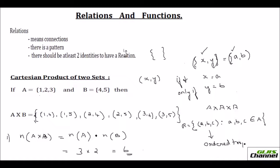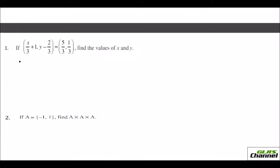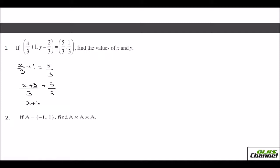These are the basic things you should know about Cartesian product. Let us do a few problems. They have said the ordered pair (X/3 + 1, Y − 2/3) is equal to (5/3, 1/3), and they ask you to find X and Y. When the ordered pairs are equal, the first terms should be equated. So X/3 + 1 = 5/3, which gives (X + 3)/3 = 5/3, so X + 3 = 5, which means X = 2.